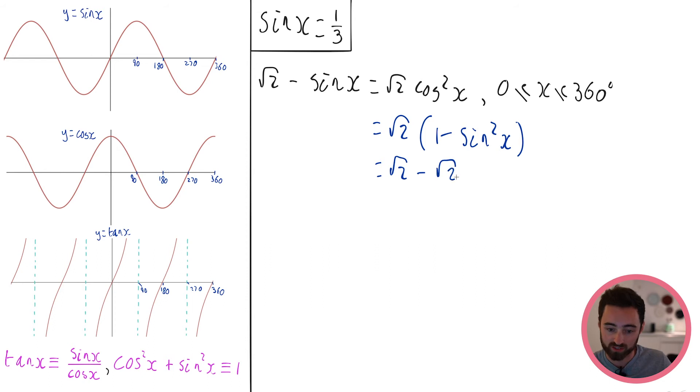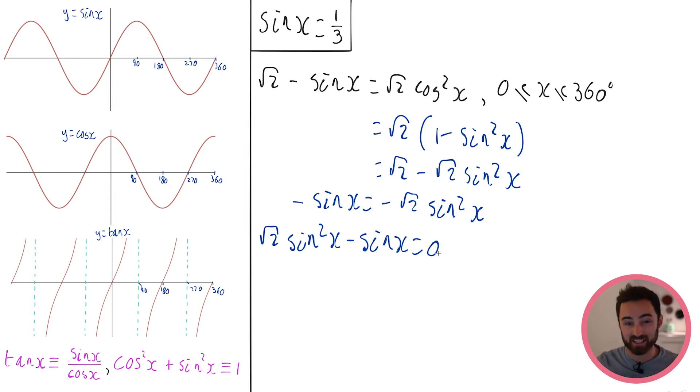I can write cos squared as 1 minus sin squared x. This is an absolute classic. Let's sort this out. This is going to be root 2 minus root 2 sin squared x. I've got root 2 minus sin x equals root 2 minus sin squared x. I can cancel the root 2's. So I've got minus sin x equals minus root 2 sin squared x. Let's add this to both sides. So I'm going to get root 2 sin squared x minus sin x equals 0. If you've seen the 10 minute topic revision on quadratics, you will recognize that this is a hidden quadratic here. If y was equal to sin x, what would happen? I would have root 2 y squared minus y equals 0, which means I can factorize this. This is going to be y root 2 y minus 1 equals 0.